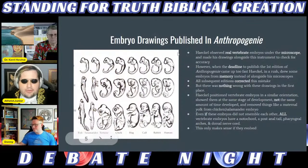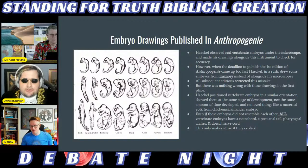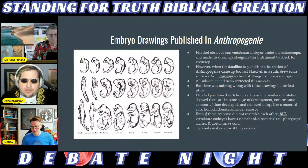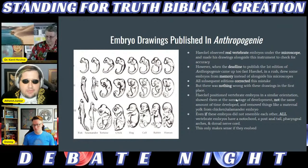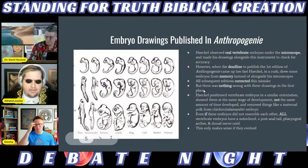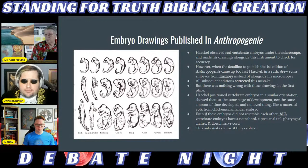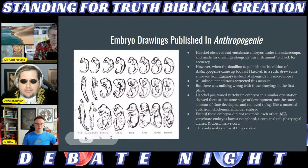Haeckel observed real vertebrate embryos under the microscope and made his drawings alongside instruments to check for accuracy. But when the deadline to publish the first edition of Anthropogeny came too fast, he drew some embryos from memory. All subsequent editions corrected this mistake. Haeckel positioned vertebrate embryos in similar orientation, showing them at the same stage of development — not the same amount of time they developed, which is a key difference — and he removed things like the maternal yolk from chicken and salamander embryos.